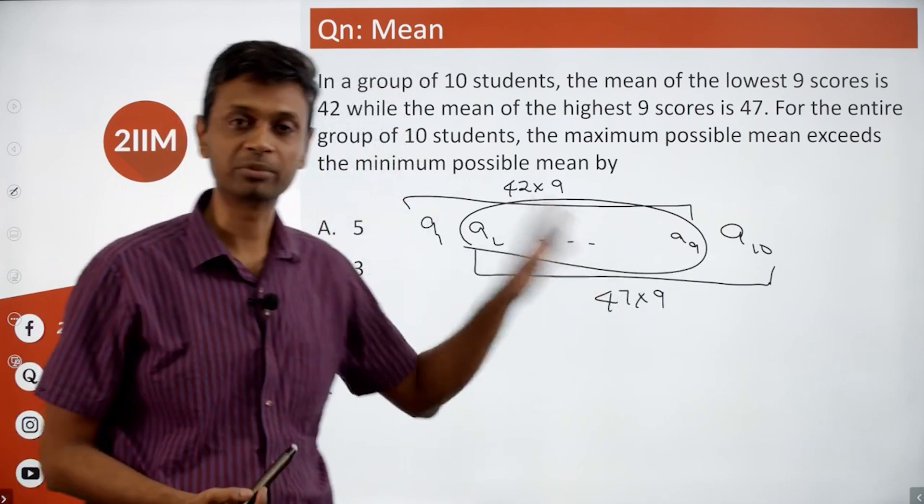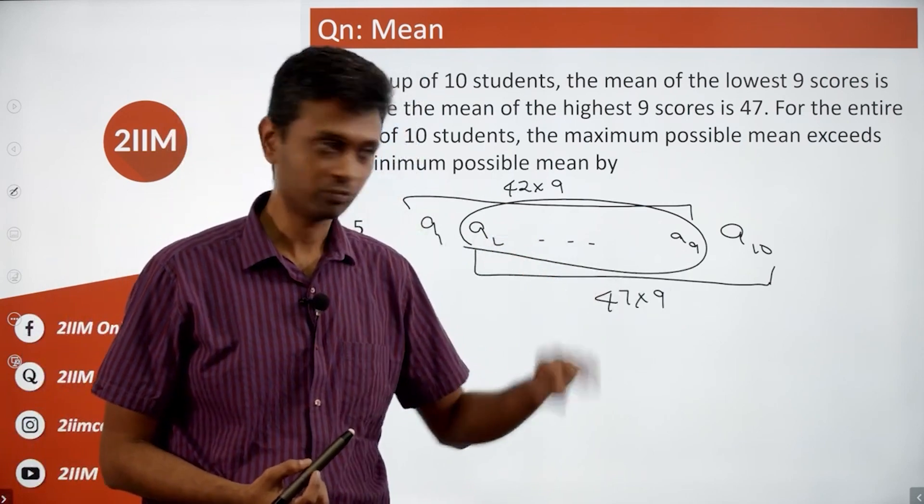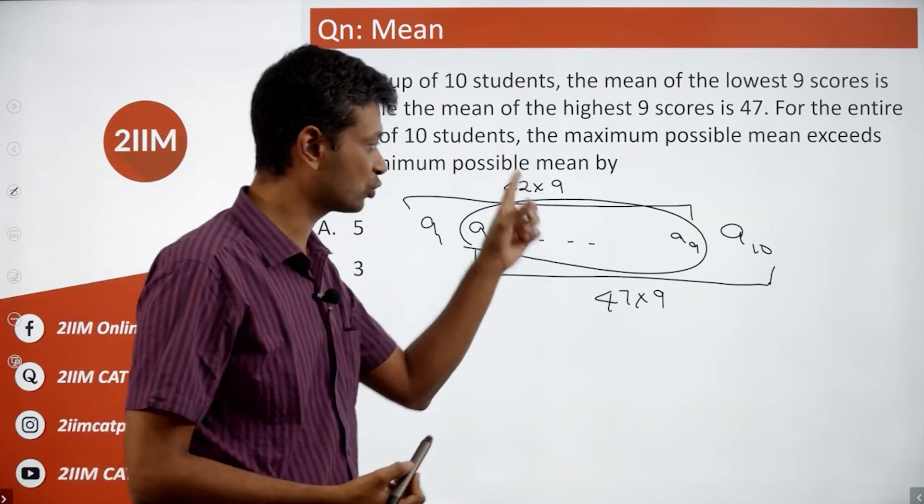...is present in both sums. So a1 plus this bunch is 42 times 9, a10 plus this bunch is 47 times 9. Subtract one from the other to get the relationship.